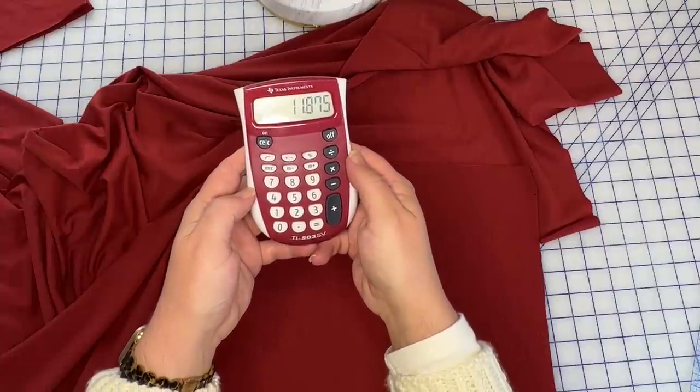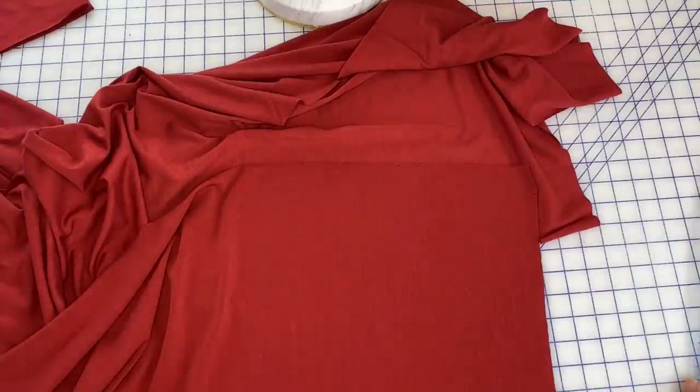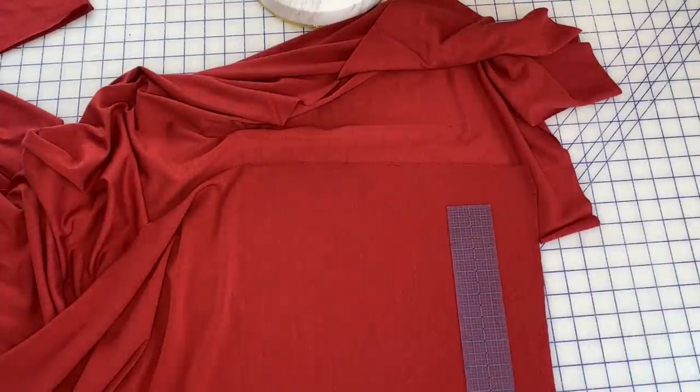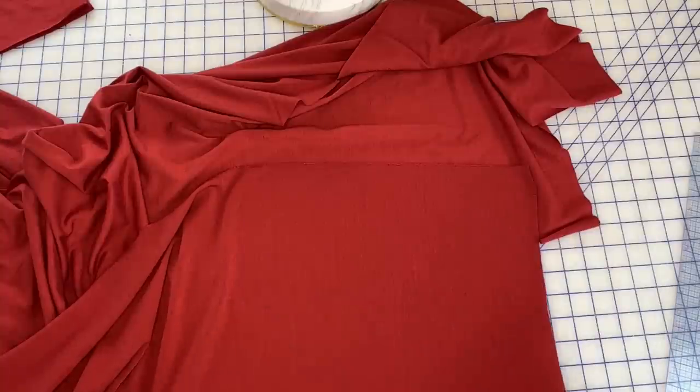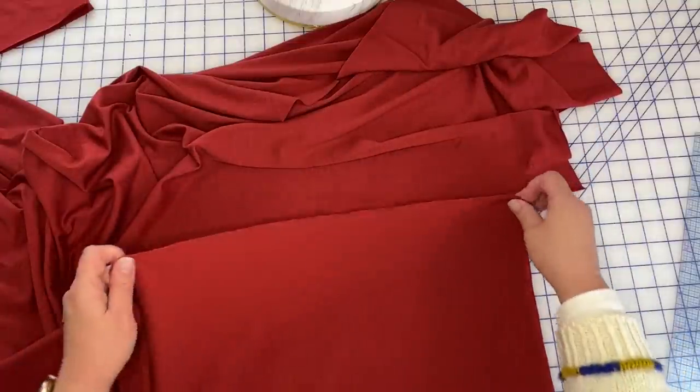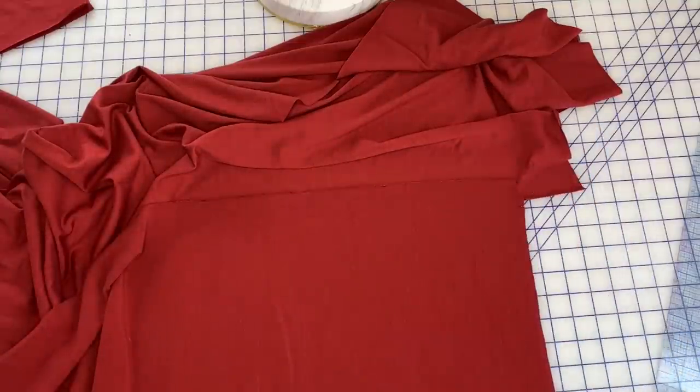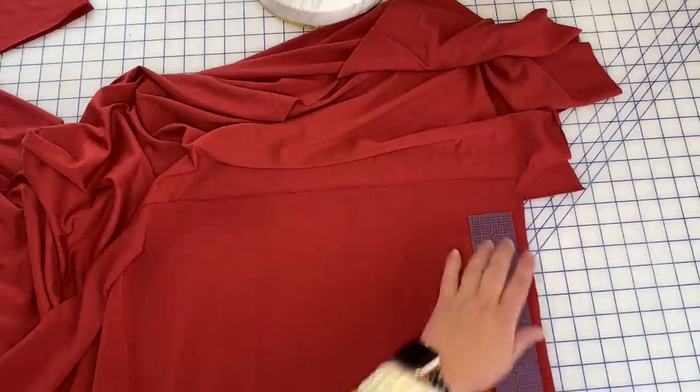All right so the reason we divided it by two is because I'm cutting this out on the fold. So we want 11 and seven eighths. You'll also notice that I'm not taking into account seam allowances on this neck band because we're wanting to stretch it anyway. So no sense in complicating things. Okay so what's also easy about this is that my ruler is two inches in diameter.